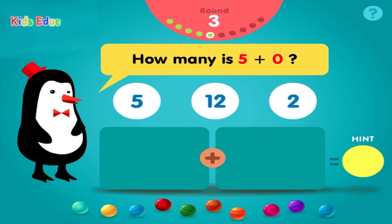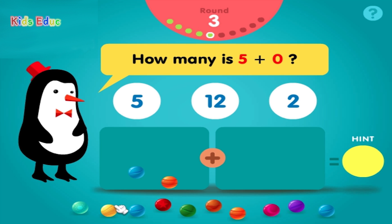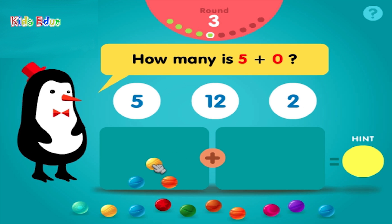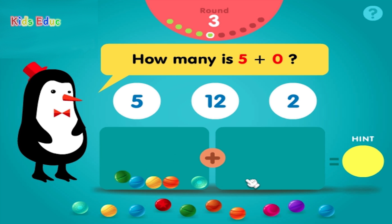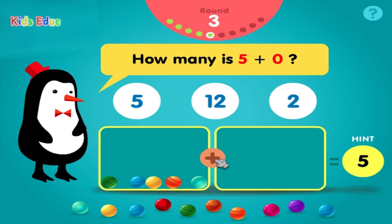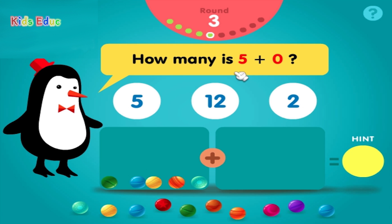How many is 5 plus 0? 1, 2, 3, 4, 5, plus 0, equals 5. Groovy!